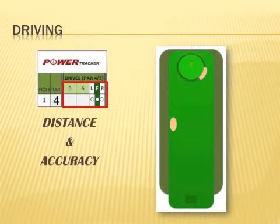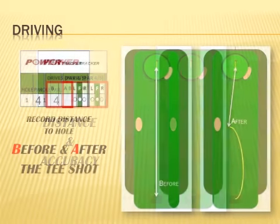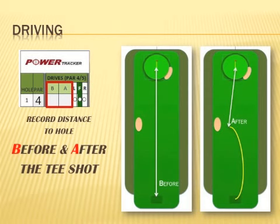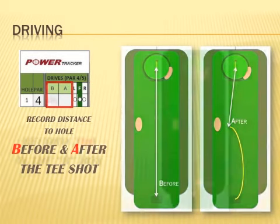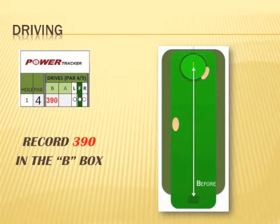To evaluate the performance of your drives, you need data on the distance and accuracy of your tee shots. For distance, you need to record the distance to the hole before and after the tee shot. For this first hole, the scorecard says the distance is 395 yards, but today's tee marker is 5 yards up, so record 390 in the B box.